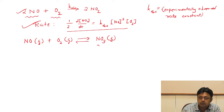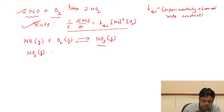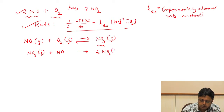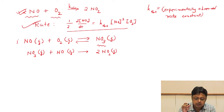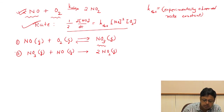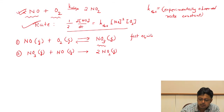In step 2, nitrogen trioxide gas reacts further with nitric oxide to form two molecules of nitrogen dioxide — all gas phase species. We have divided the overall composite reaction into two elementary bimolecular reactions. In the first step, we consider a fast equilibrium between reactants and products — it is a reversible reaction. The second step is a slow reaction.